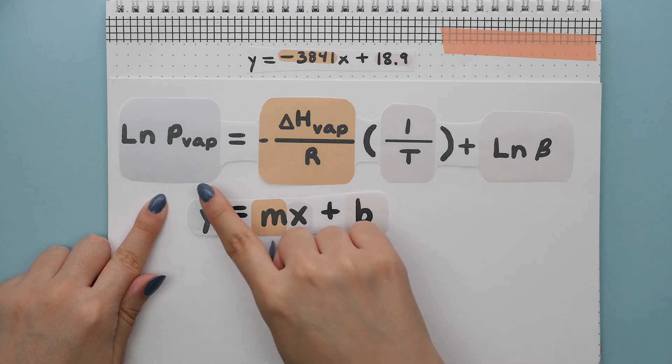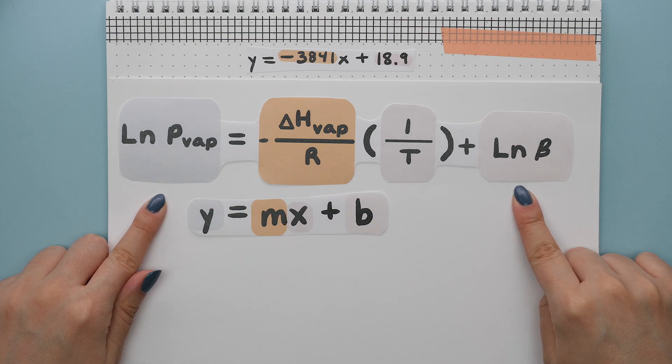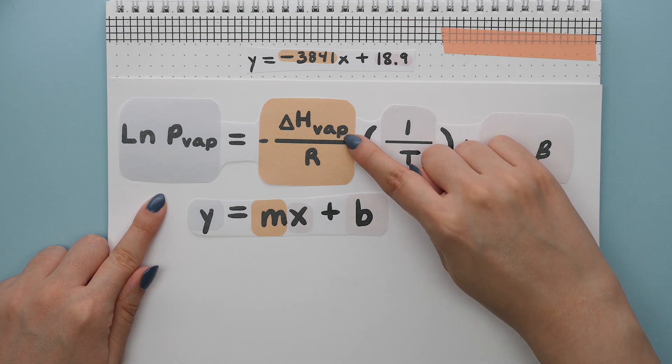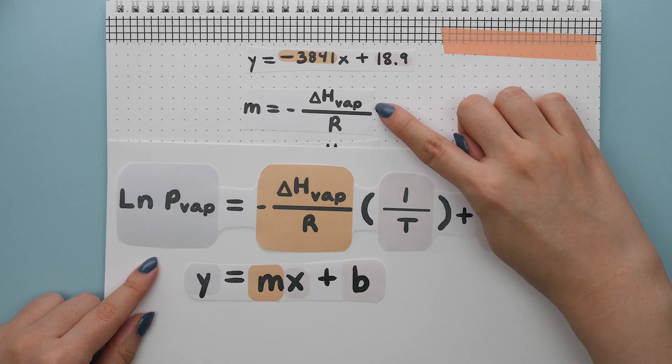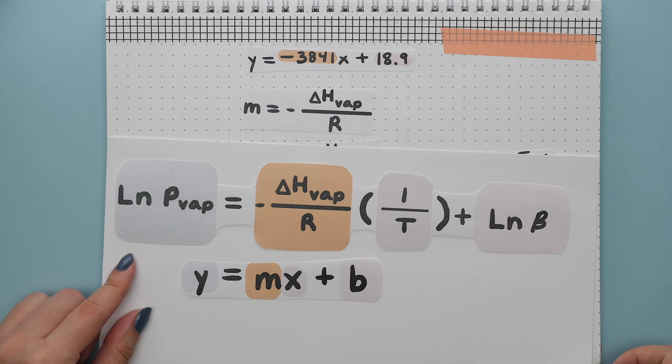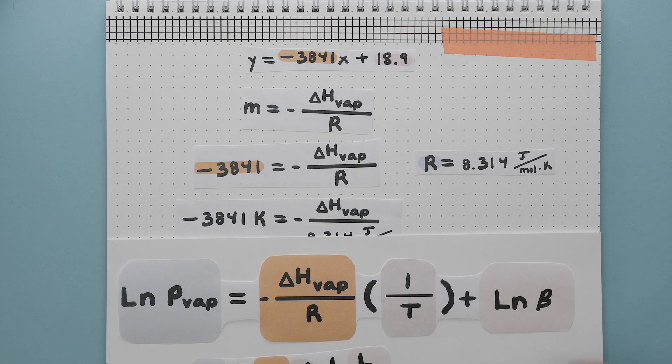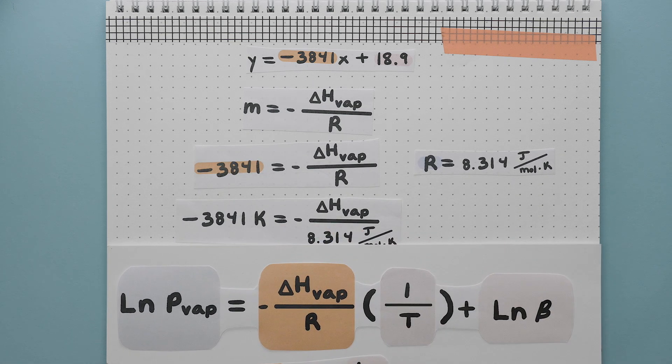Remember what each part of this equation actually refers to. If we are looking for the heat of vaporization, which is this, we can use the slope and set the slope equal to this entire term. Our slope would have the unit of Kelvin since the x-axis was referring to temperature.